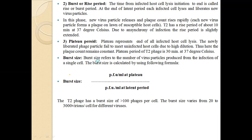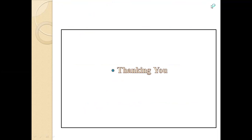The burst size refers to the number of virus particles produced from the infection of a single cell. Burst size is calculated using the formula: burst size equals plaque-forming units per ml at the plateau period divided by plaque-forming units per ml at the latent period. T2 phage has a burst size of more than 100 plaques. Burst size varies from 20 to 300 virus particles per cell for different viruses.